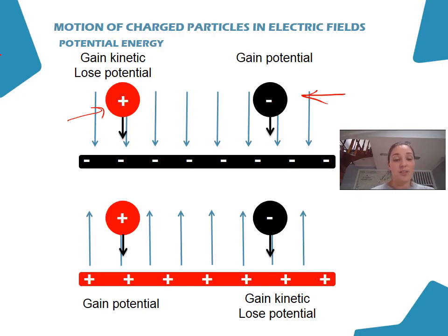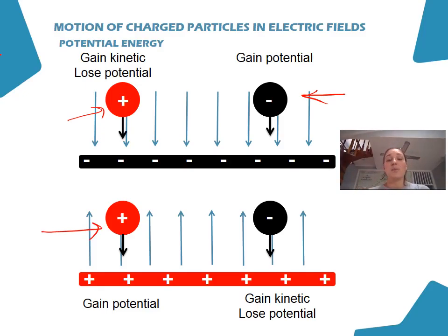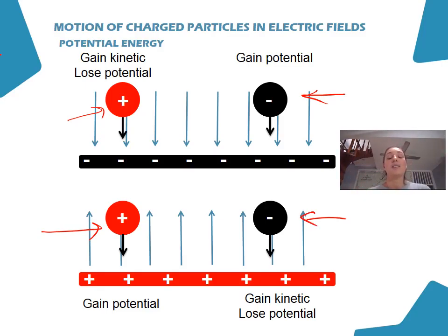Similarly, looking at the bottom of the diagram with a positive central charge: if a positive charge is brought close to another positive charge, it wants to slow down, reducing its kinetic energy and therefore gaining potential energy. Conversely, a negative charge near a positive charge will want to accelerate, increasing its kinetic energy and therefore losing the same amount of potential energy.